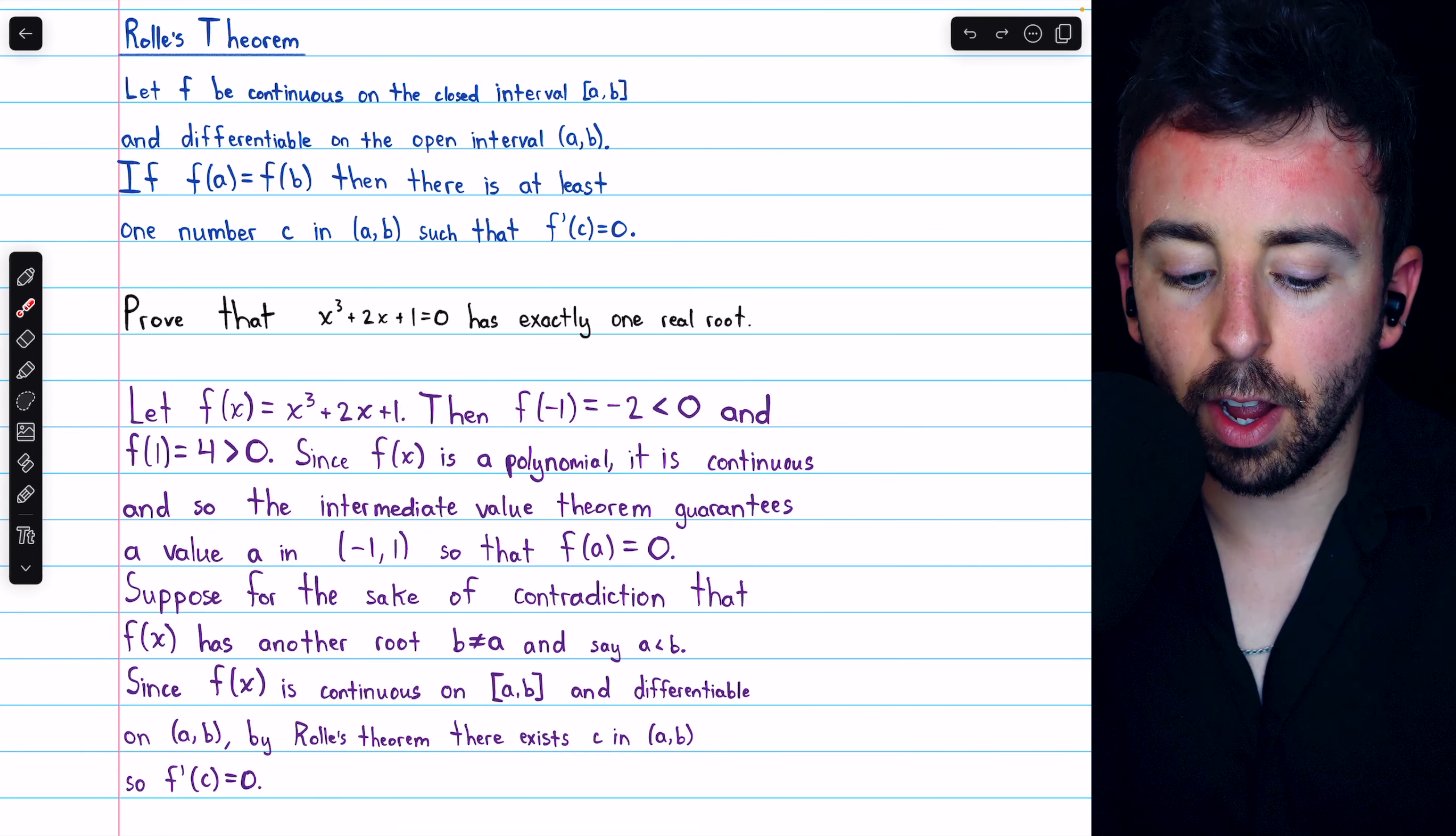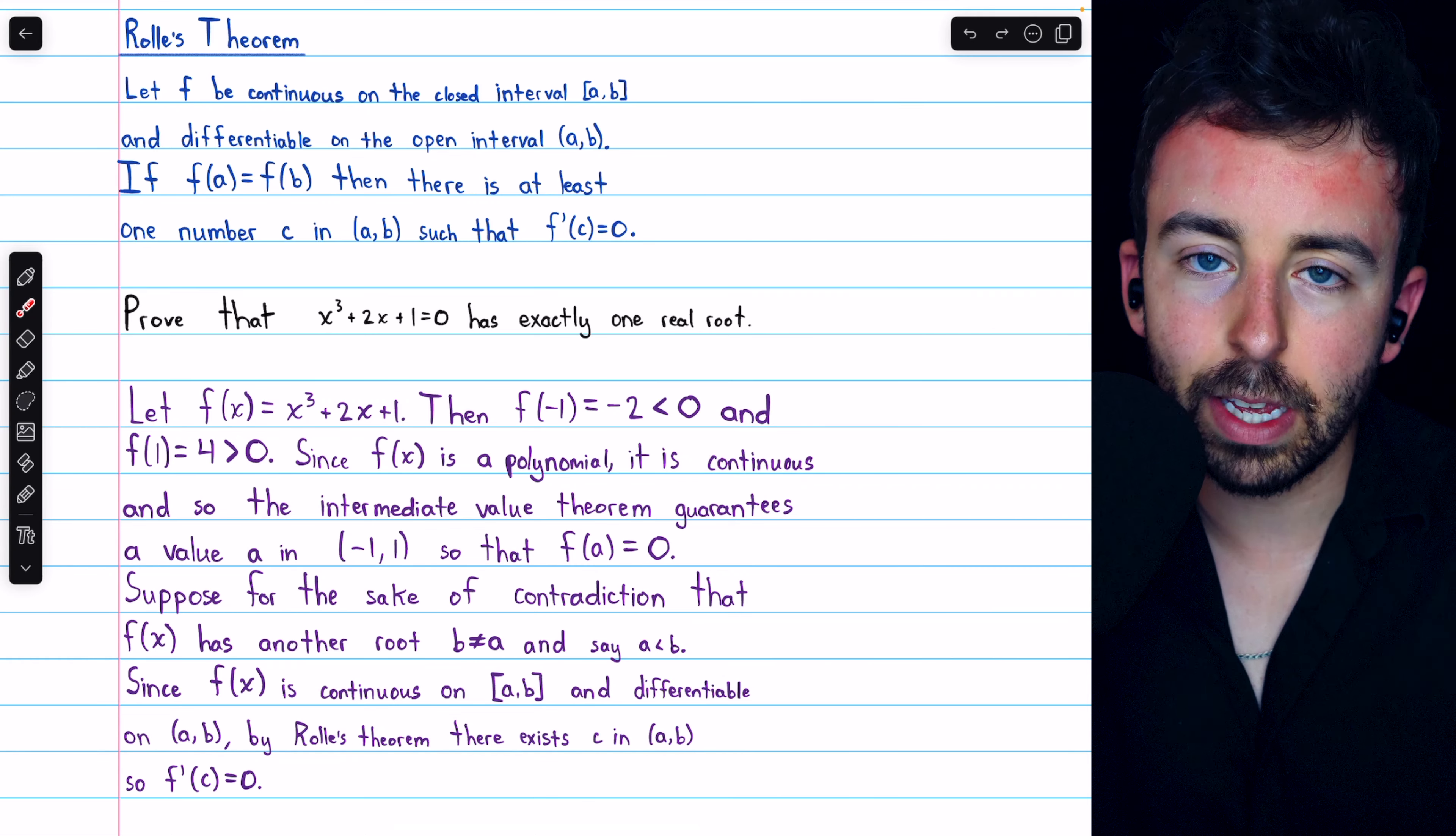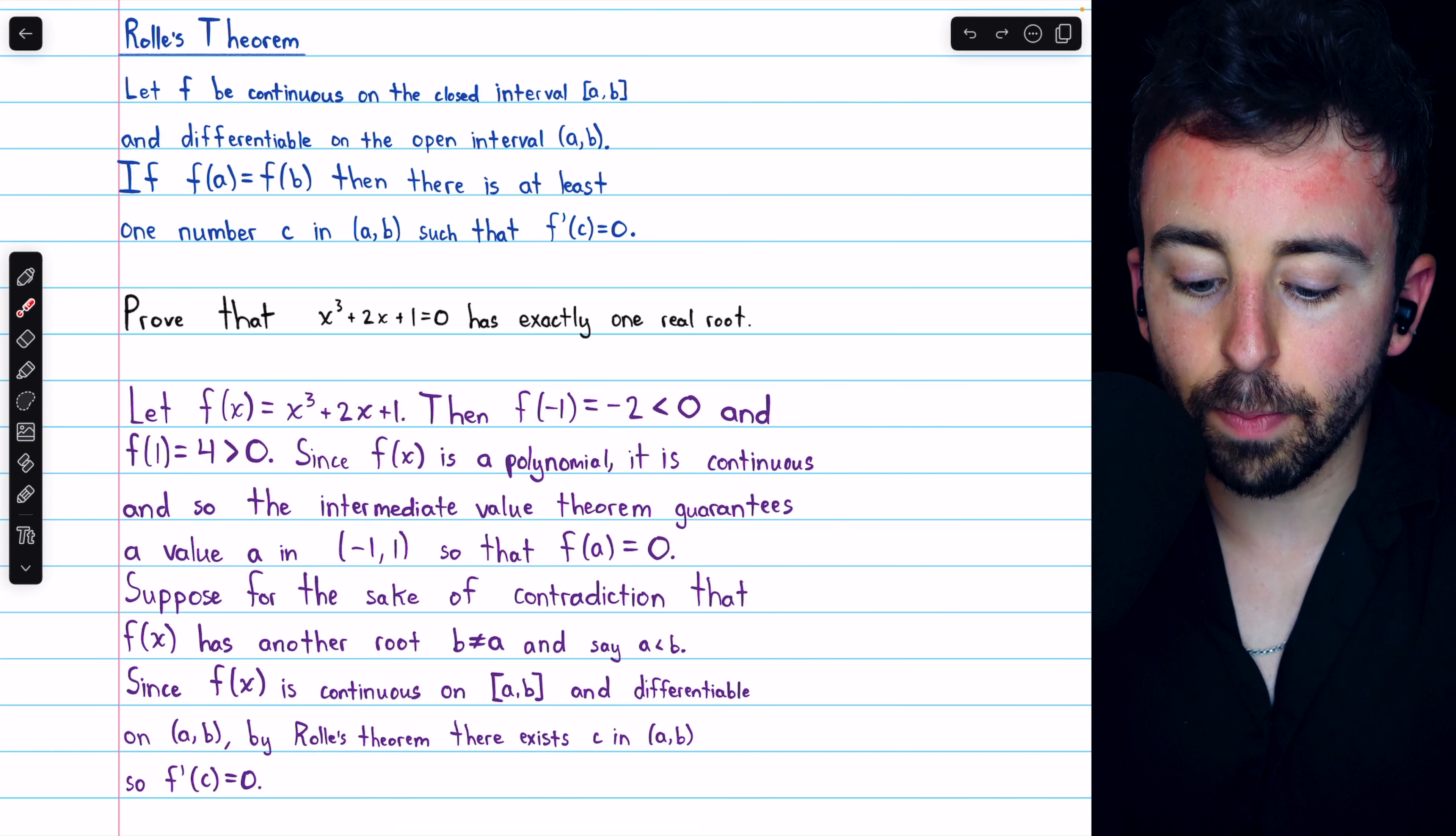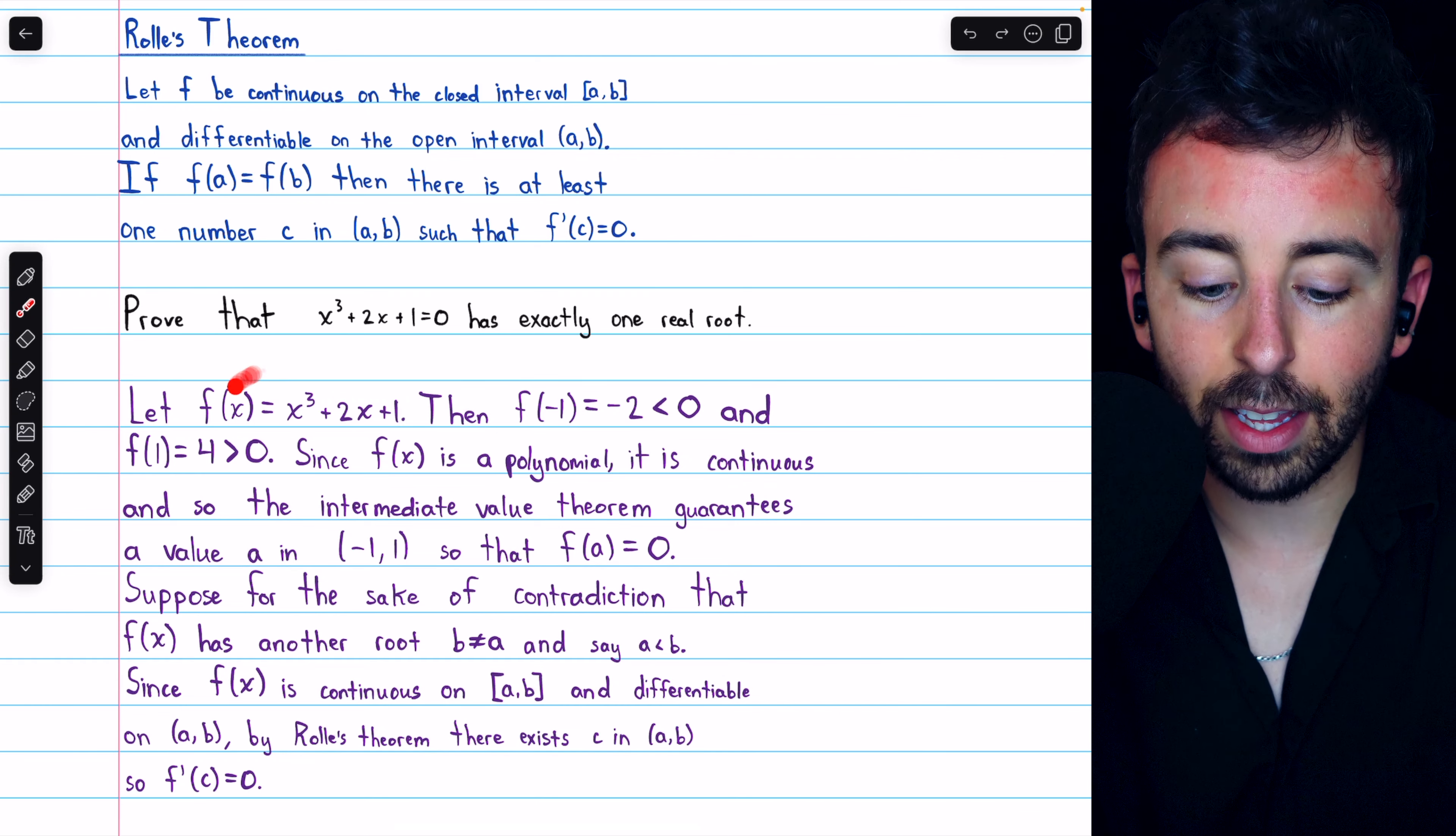So again, we're supposing for the sake of contradiction that f of x has another root. Let's say b that's not equal to a, the one that we already know exists, and let's just assume that a is less than b. Whether a is less than b or the other way around doesn't matter. This just helps us keep our notation consistent. Now, we know that f of x is continuous on the closed interval from a to b, where a is the x-coordinate of the first root that we know exists, and b is the x-coordinate of the second root that we're assuming exists. We know that f of x is continuous on this interval because it's a polynomial.